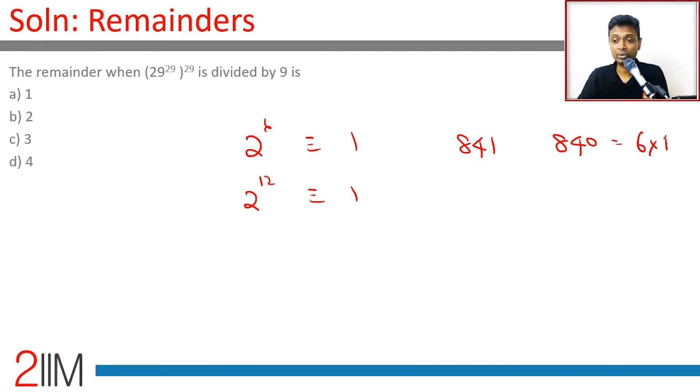It is 6 times something—I don't even need to verify what it is. It's 6 times 140. So 2^840 gives a remainder of 1, and 2^841 will give a remainder of 1 times 2.